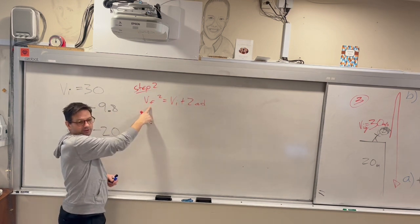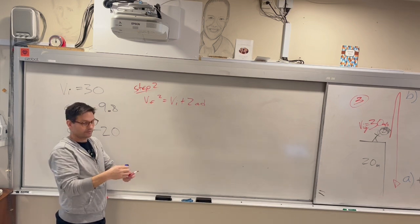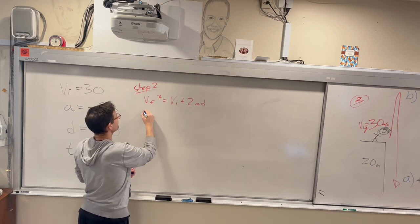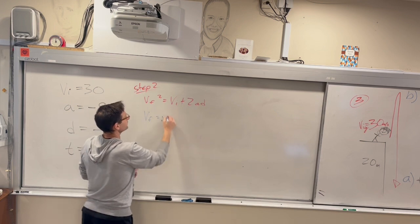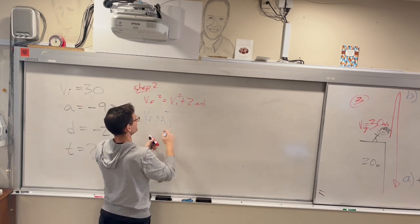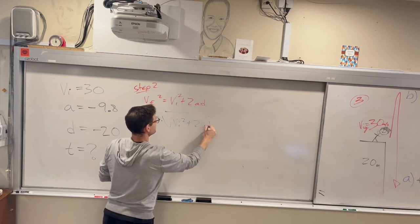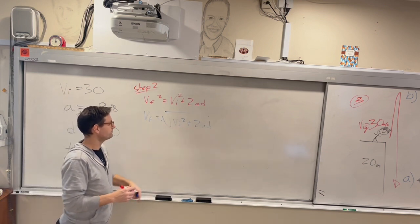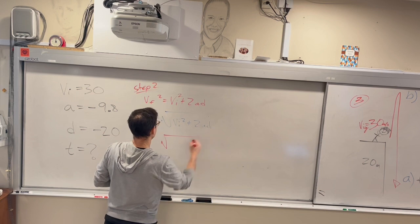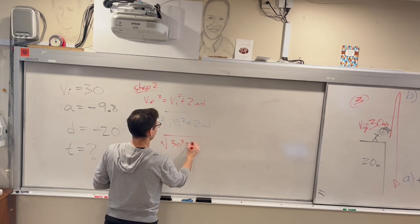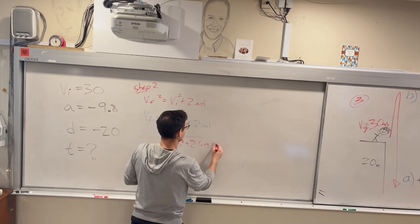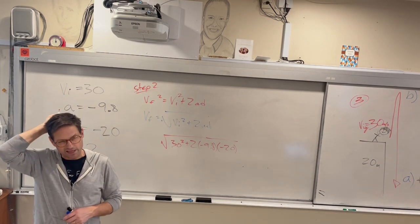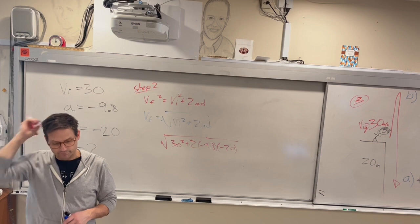We're going to solve for VF. How do I do that? We just need to get rid of this square. We're going to square root it. Oh sorry, this is supposed to be a square. VI squared plus 2AD. I hate putting numbers in my calculator, I'm just lazy like that, so I would just put these in. But I'll write them down for us now. This is 30 squared, so that's going to be 900. And about negative 20 times negative 20, so 400. So that's going to be about 500 square root of 500.